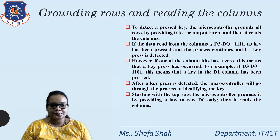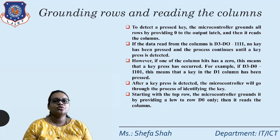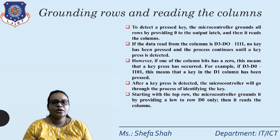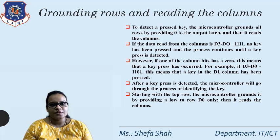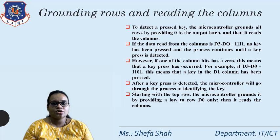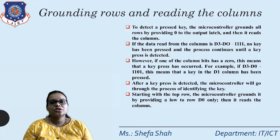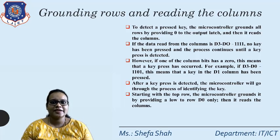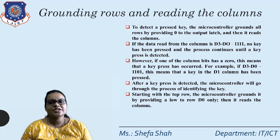To detect a pressed key, the microcontroller grounds all the rows by providing 0 to the output port and then reads the columns. Initially all rows are set to 0 and all columns are set to 1. Whenever a key is pressed, the output connected to the columns will change from 1 to 0. From the intersection of that particular row and the column that changed, we can determine which key was pressed.